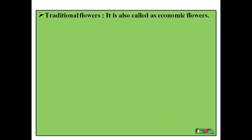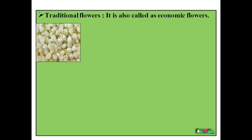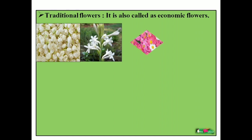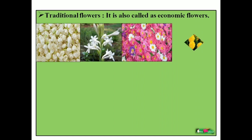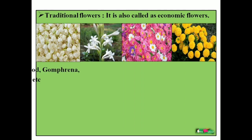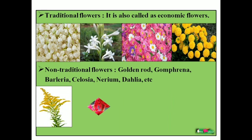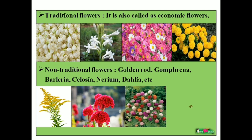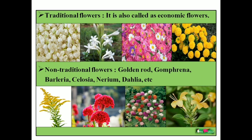Next, what is the difference between traditional flowers and non-traditional flowers? Traditional flowers have economic use — we can earn money from them all over India, and most importantly we can cultivate them at a commercial level. Non-traditional flowers cannot be cultivated at commercial level. Examples of traditional flowers are jasmine, tuberose, chrysanthemum, and marigold. Non-traditional flowers include goldenrod, seleucia, gomphrena, and crossandra. In southern states, crossandra is cultivated at a commercial level.